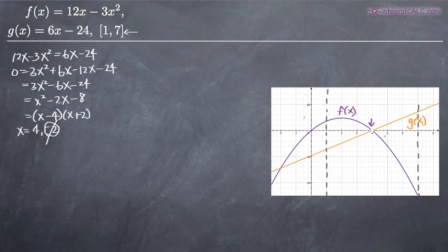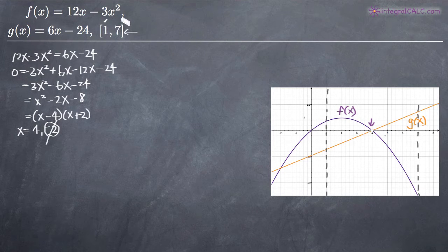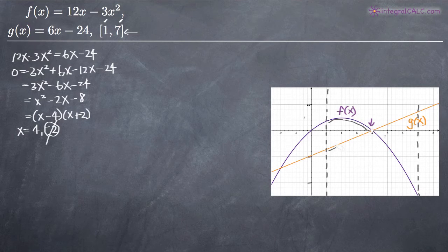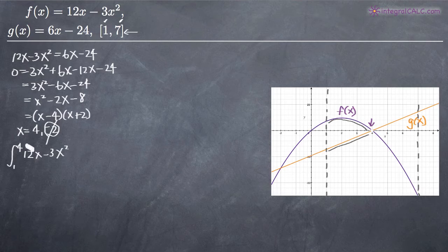Now we need to write our integrals. We need an integral from 1 to 4 — the left endpoint to the intersection point — and then from 4 to 7. From 1 to 4, f(x) is above g(x), so we write the integral from 1 to 4 of [f(x) − g(x)] dx, which is (12x − 3x²) − (6x − 24) dx.